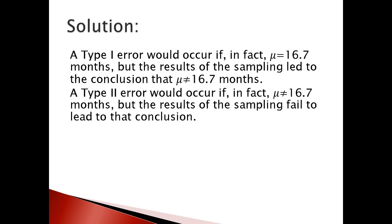Similarly, Type 2 error is not rejecting the null hypothesis when it is in fact false. Here, μ ≠ 16.7 is the alternative hypothesis, meaning the null hypothesis is false. But if the result of sampling fails to lead to that conclusion, we call it a Type 2 error.